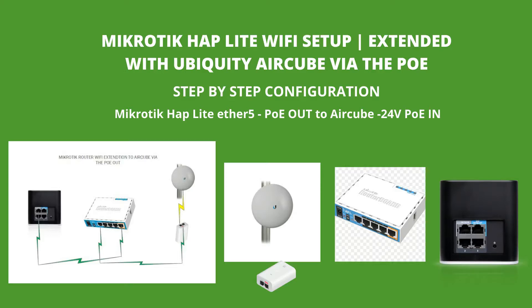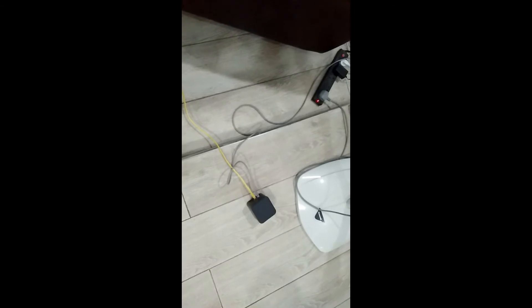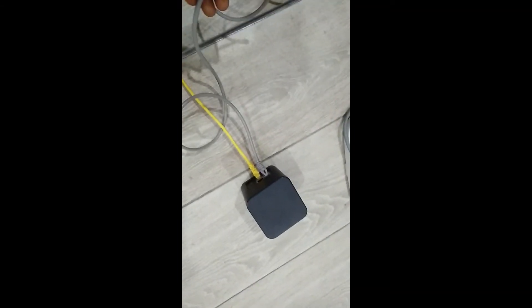Welcome back to my channel. Today I want to talk about MikroTik hAP lite for configuring a Wi-Fi internet connection. What I did was extend the MikroTik hAP lite to a Ubiquiti cube using the MikroTik POE out. I was able to achieve that using two methods, and I want to discuss both in this tutorial so it can be helpful to somebody out there.